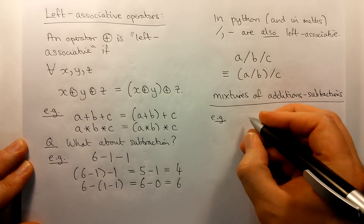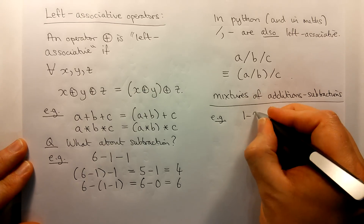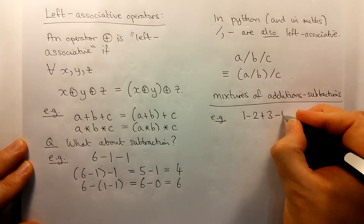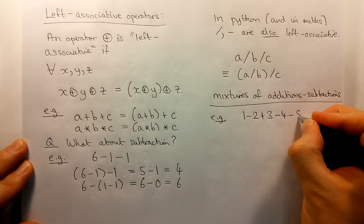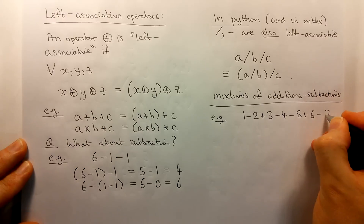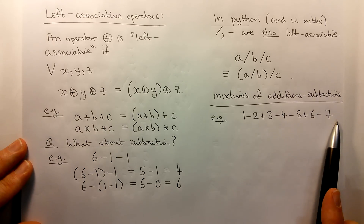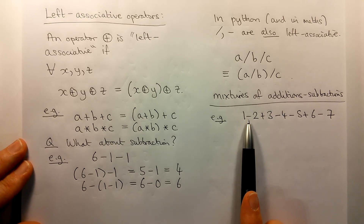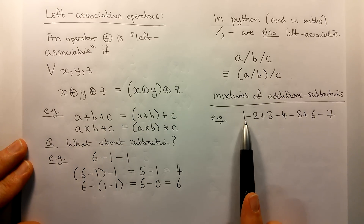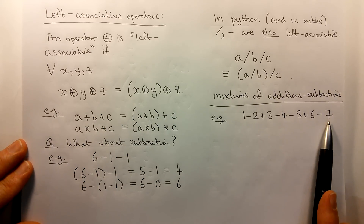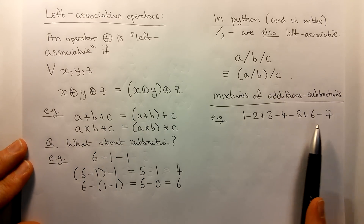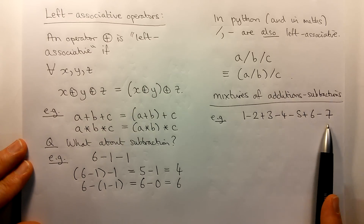For example, what if I had an expression like this? Provided that the only operations involved are addition and subtraction, in everyday mathematics we treat these two operators as equally important. So in a mixed expression involving only addition and subtraction, we always work from left to right.